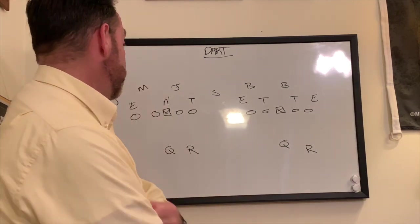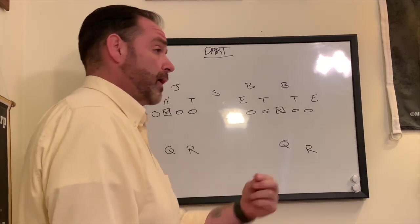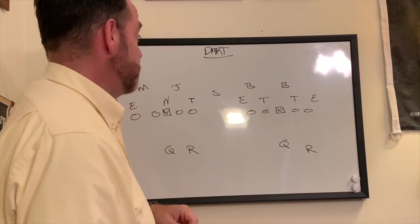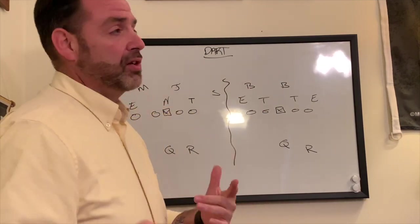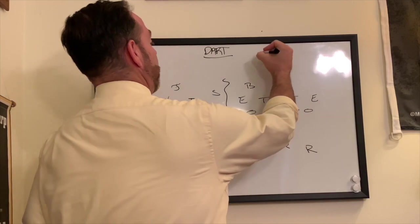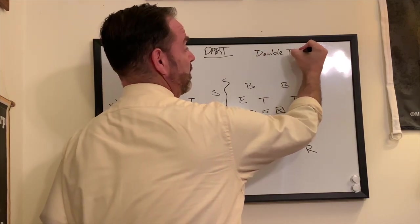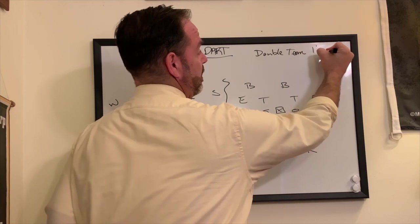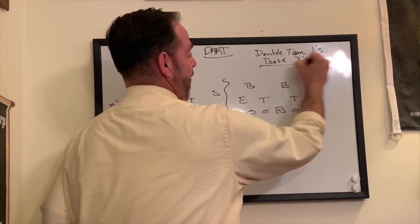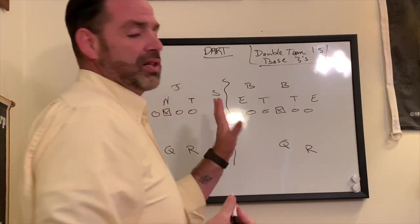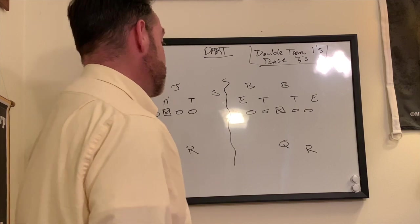If you're having a hard time back blocking to the end you can run the wrap and kind of get the same look. And for us when we run dart, the one thing that you need to understand is there's a basic rule and we're going to double team ones and base threes. And that rule holds true no matter what you see defensively.